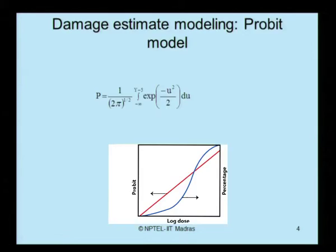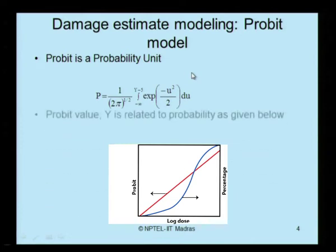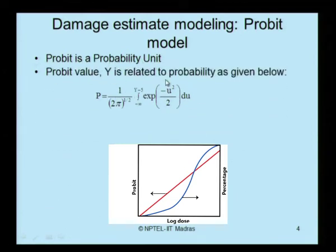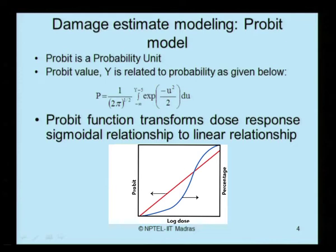For estimating the accident scenario, we look for damage estimates. The probit model is one of the most commonly used models in the literature. Probit stands for probability unit, which is why it is called probit. The probit value y is related to probability, and the probit function transforms the dose-response relationship into a linear relationship.